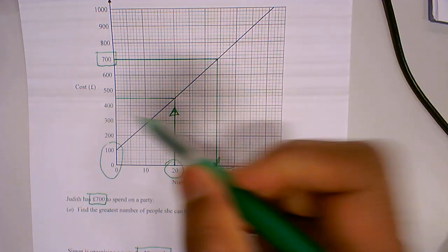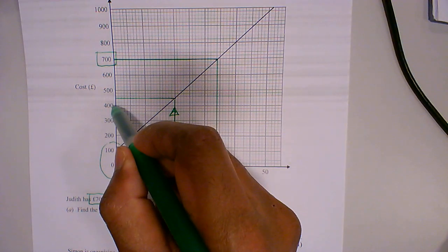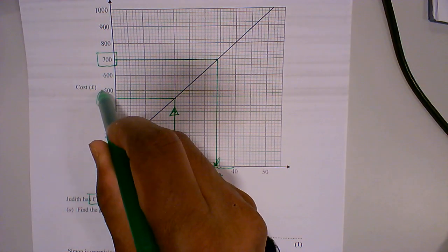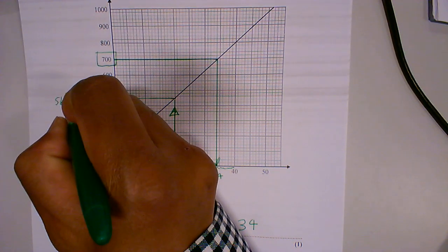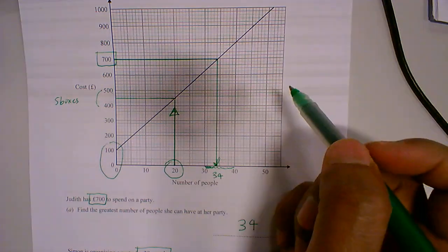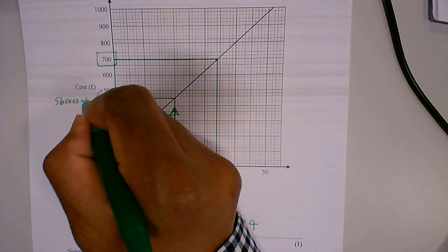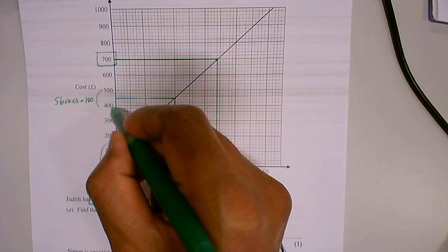Okay, so here I'm going up 5 boxes to 500. 5 boxes equals 100, so one small box will be 20.